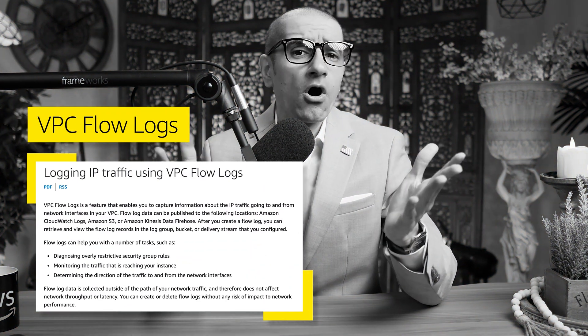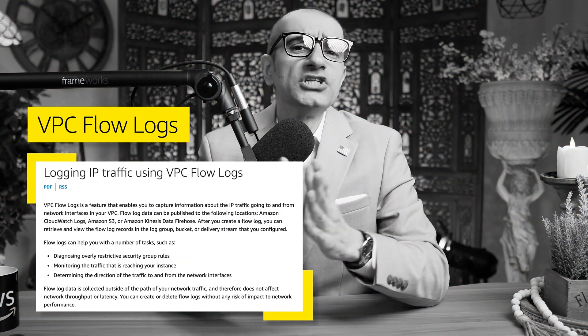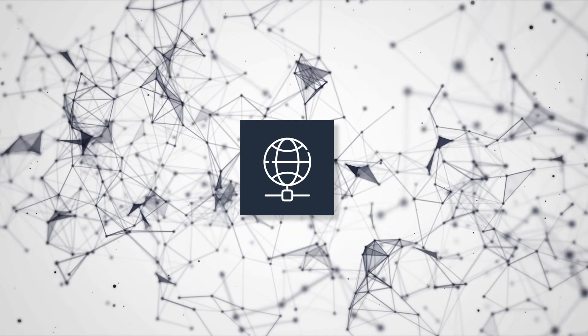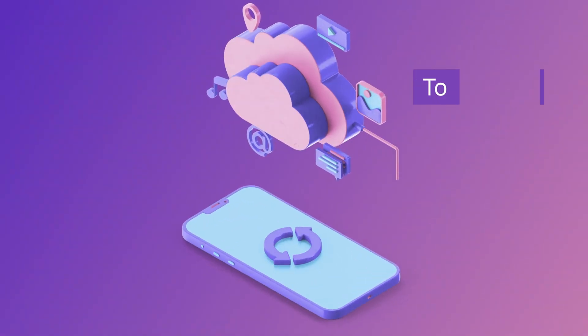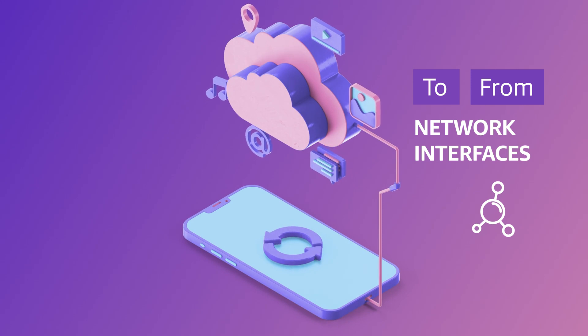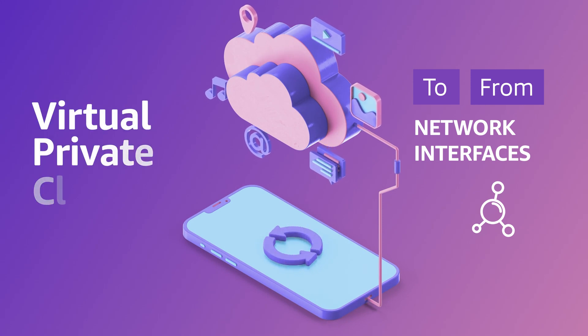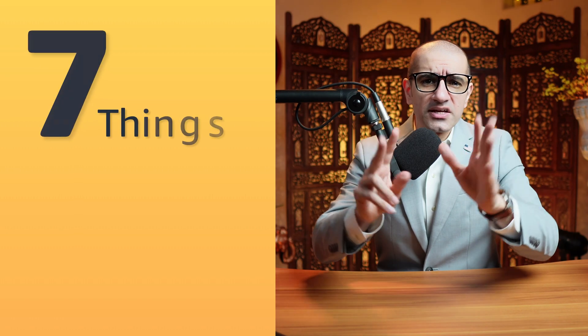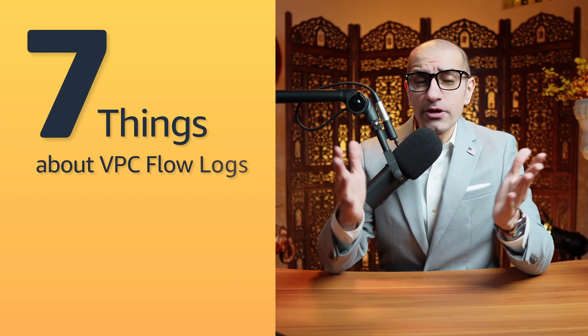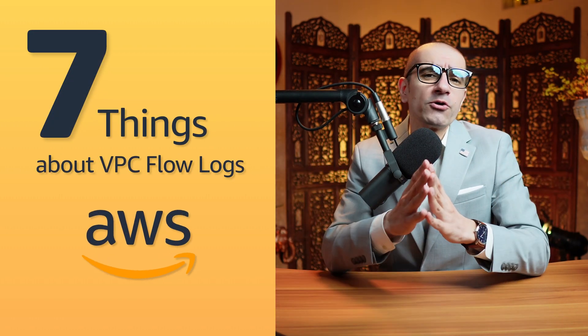VPC flow logs is a feature in AWS that allows you to capture IP traffic information going to and from network interfaces in your virtual private cloud. Hi guys, this is Abhi from GokkshaDB and in this video you're going to learn 7 things about VPC flow logs in AWS.